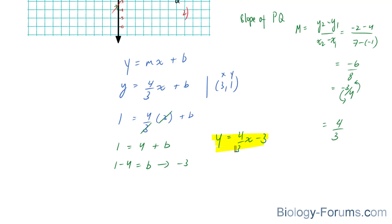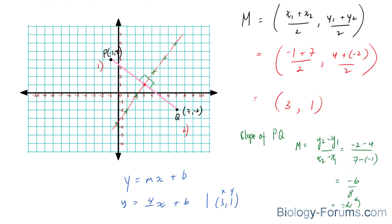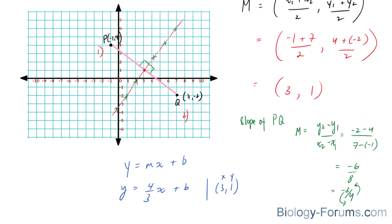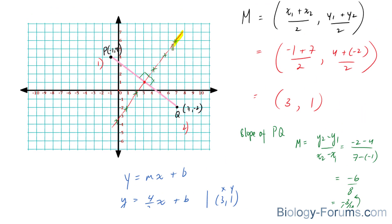This highlighted formula represents this red line, and anywhere along this red line will be equidistant from school P and school Q.